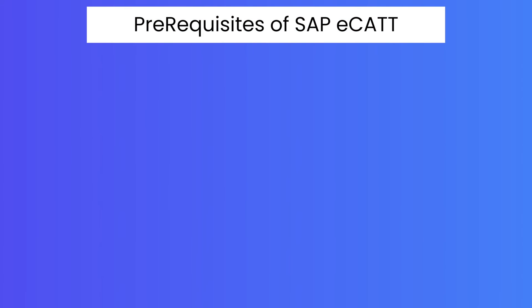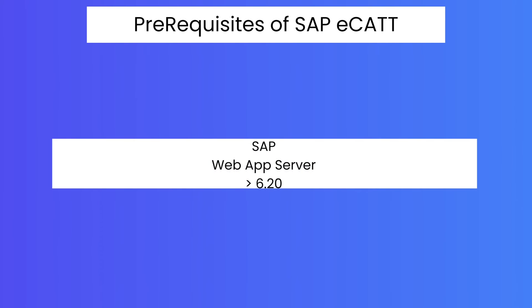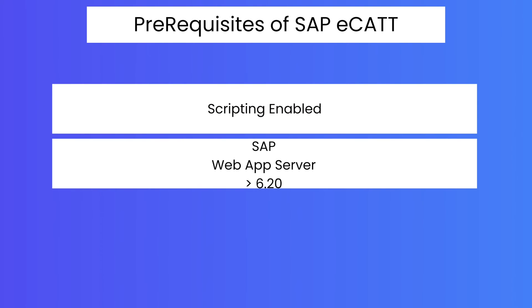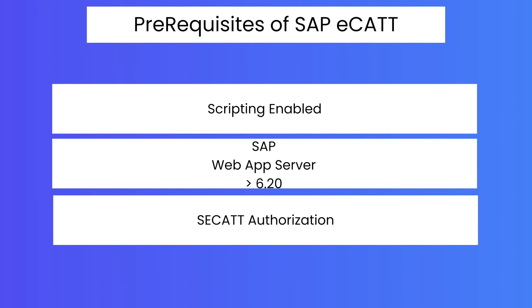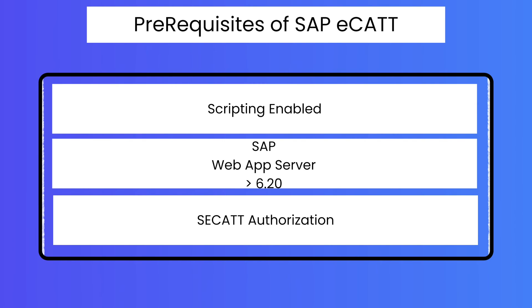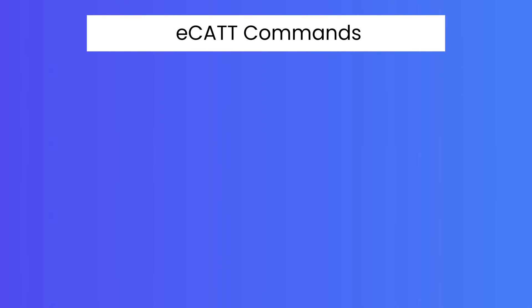What are the prerequisites to use SAP eCATT? First, you should have a SAP system running on Web Application Server 6.2 or higher. Second, you have to enable scripting on the SAP system — to enable scripting, you need to contact your SAP Basis team. Third, you must have the necessary authorizations for SAP eCATT. If you don't have access to the eCATT transaction, please reach out to your authorizations team.